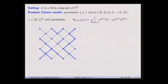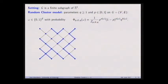This measure was introduced in the 70s by Fortuin and Kasteleyn. It's called FK percolation or the random cluster model. If you set Q equals 1, the weight is just P times (1 minus P) to the number of open and closed edges and you get Bernoulli percolation. We'll take Q greater than 1 generally. To make this a probability measure, you sum all weights over all configurations — that's the partition function — and divide each weight by it.